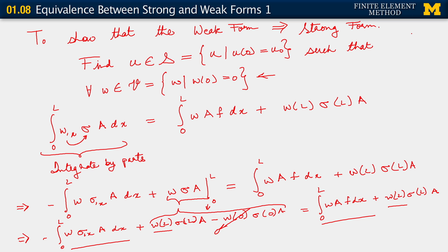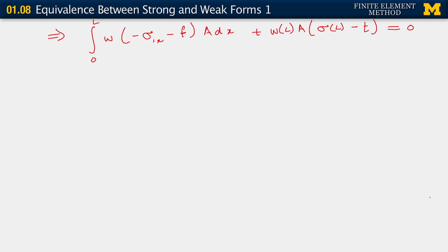Let me remind ourselves of what we had here. I noticed that when I wrote this weak form, I actually jumped ahead of myself by writing something I ought to have done a little differently. The sigma at L in the weak form actually appears as t. So I need to correct all the sigma at L's and replace them with t. Because that is the weak form — I was jumping ahead by already implying the Neumann boundary condition, but that is not how we write the weak form. Now things are correct. In this very last term, I do indeed have sigma at L minus t.